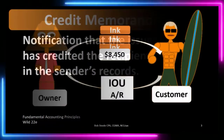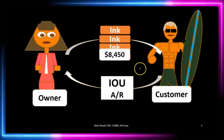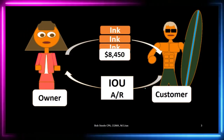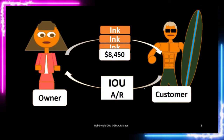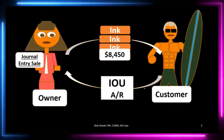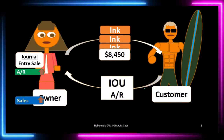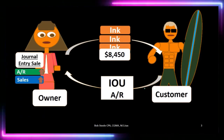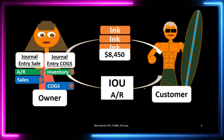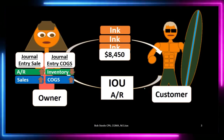Let's take a look at an example. If we had a customer that purchased inventory and gave us an IOU, the transaction for the purchase would be: accounts receivable goes up, sales goes up, and on the inventory side, inventory would go down and cost of goods sold would go up.